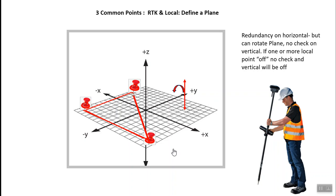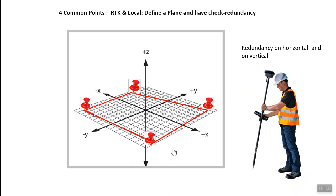With that third point, I could use the one-step to find my fourth point. The fourth point defines a plane, giving redundancy on both horizontal and vertical to check the integrity of all these points. I'd use these four points to surround my job area to work in that local system. Four points around the job area on local control gives us redundancy on horizontal and vertical.